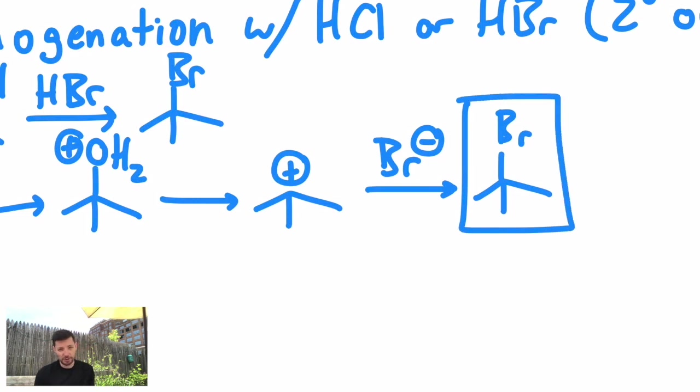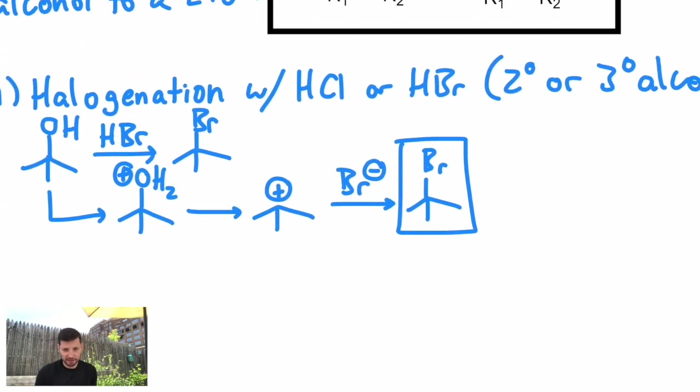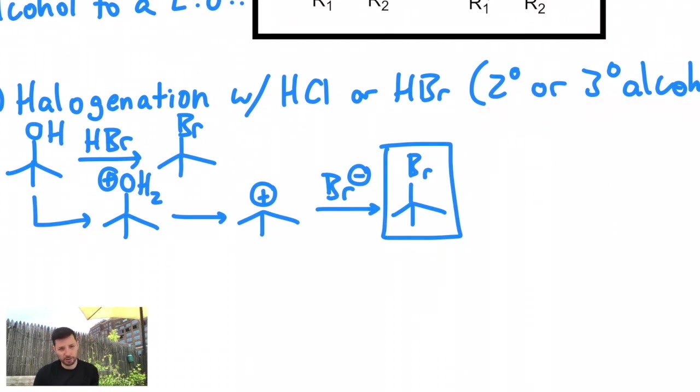And instead of HBr, we could use HCl, you just get the chloride instead of the bromide. So you can see why I said this is exclusive for things like tertiary alcohols and even some secondary alcohols. It would obviously also work fine on allylic or benzylic alcohols because it's the formation of that carbocation that's the restriction.